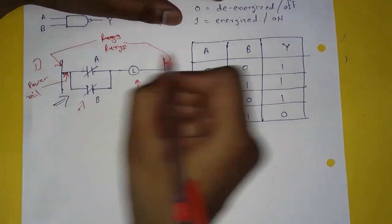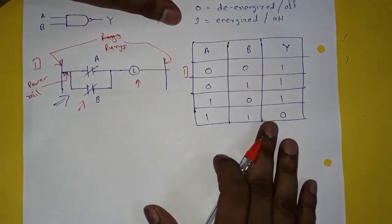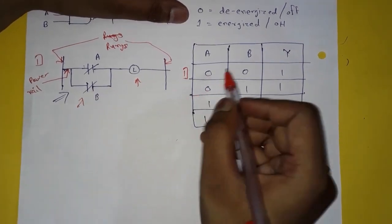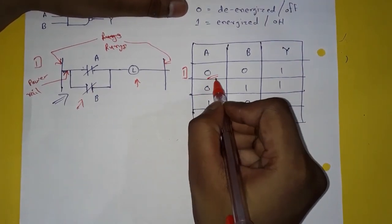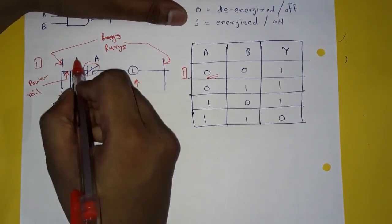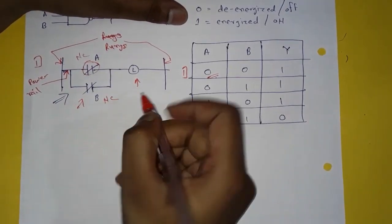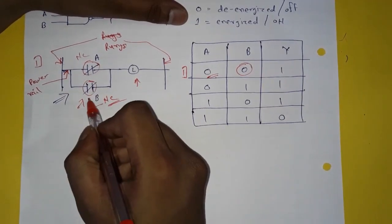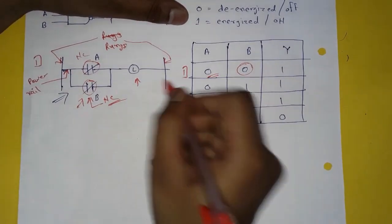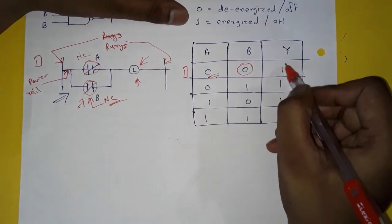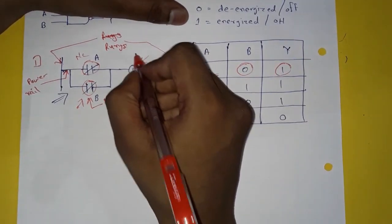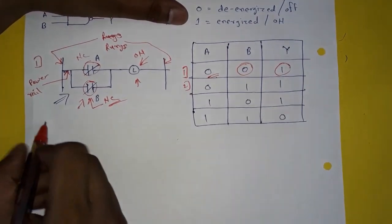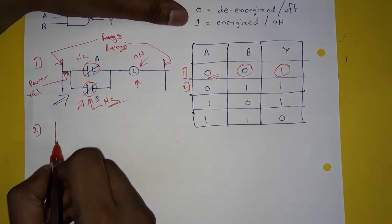This is the first condition. A is de-energized — that is off — so it remains normally closed. B is also de-energized, so it also remains in normally closed condition. The lamp will glow, so Y is 1 — the lamp is on.